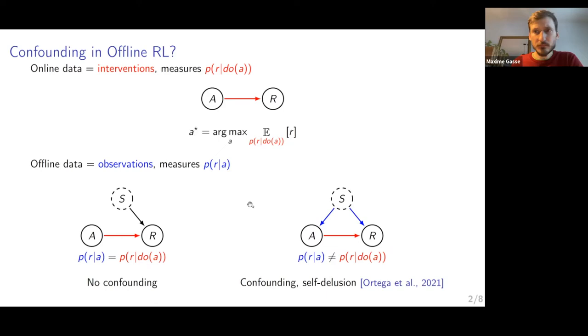If you observe another agent that acts but doesn't have access to this additional information, then the causal graph looks as follows. There is no confounding, and what you observe is actually the causal distribution that you want. However, if the agent that you observe has access to privileged information about the system, represented with an additional arrow between S and A, then this will create a confounding effect. What you measure is not anymore the causal distribution. This problem is also called the self-delusion problem in a recent paper by Ortega et al.